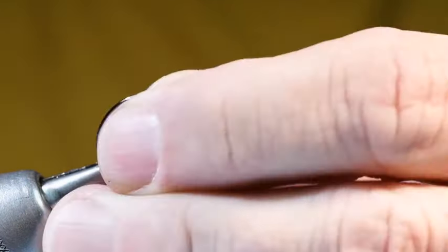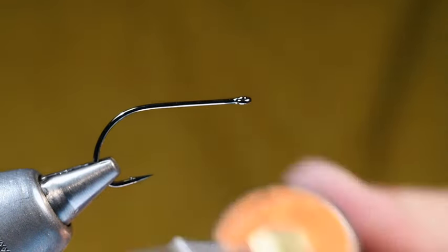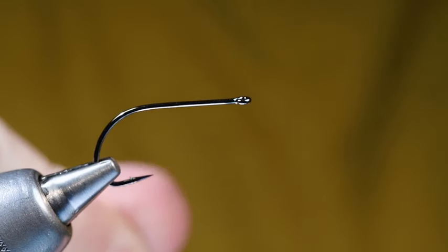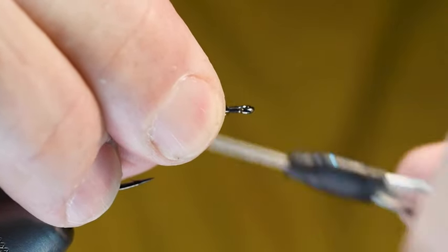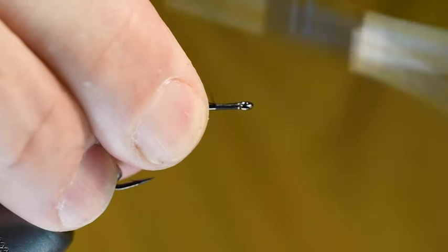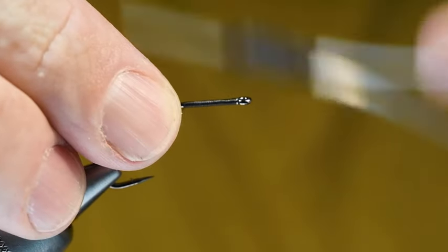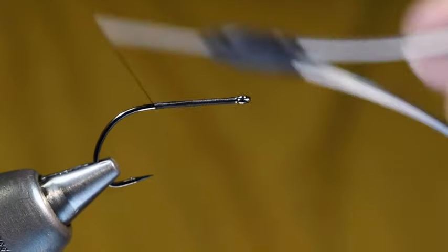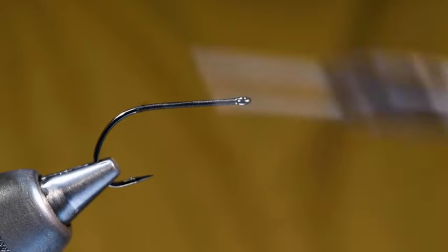I'm going to start off with a Gamakatsu B10S size 4 and clamp that in my vise. I've got some 6-aught unithread in black. Obviously you can tie this in whatever colors you'd like. It's a pretty simple little pattern and not terribly material intensive. It's just foam, silly legs, a little bit of dubbing, some thread, a little shot of super glue here and there. So fairly easy fly.